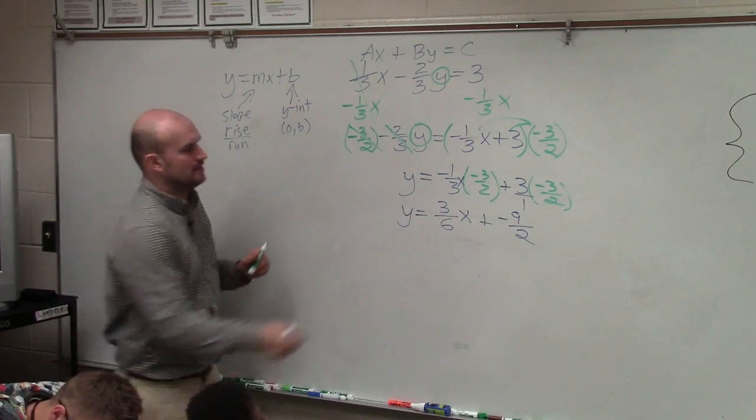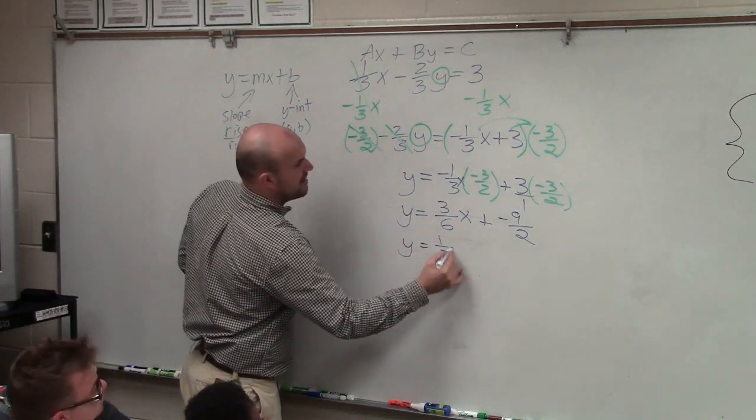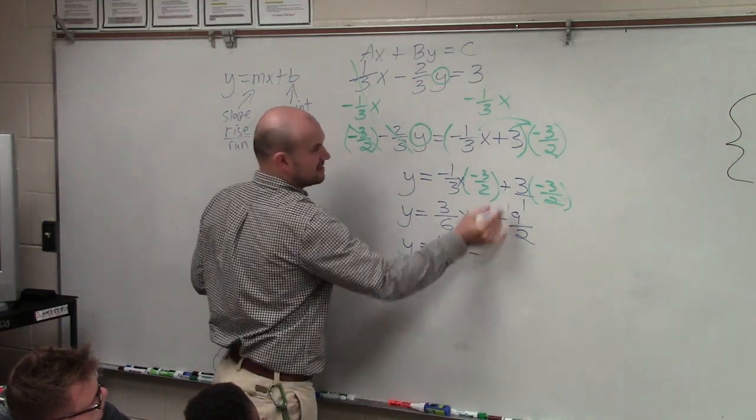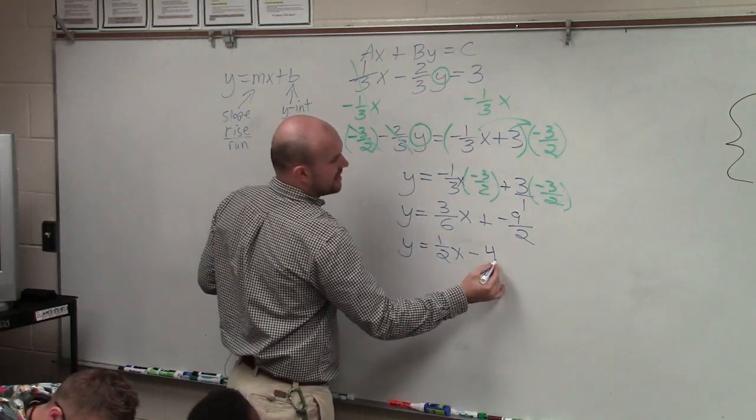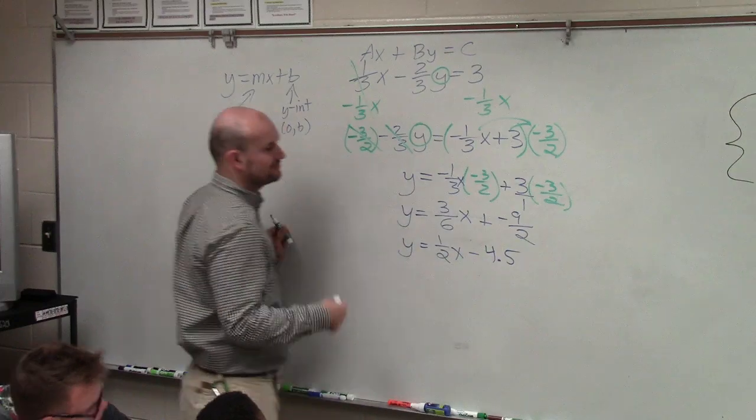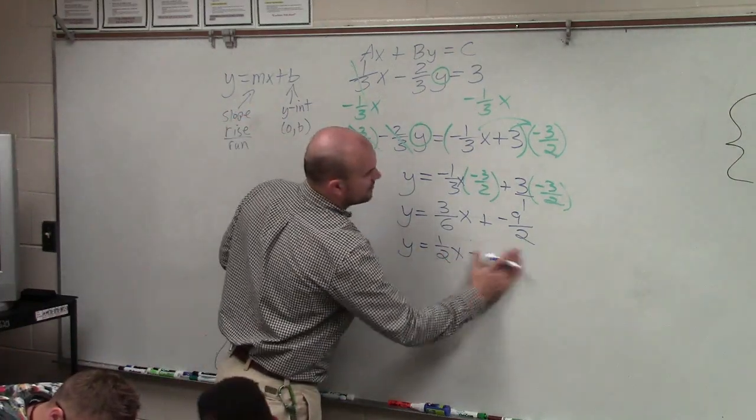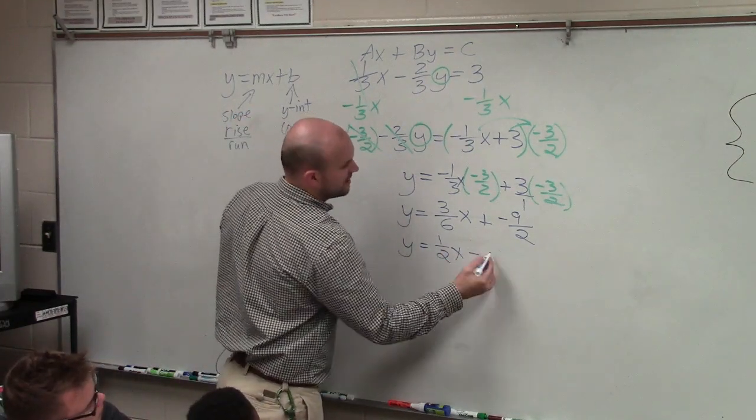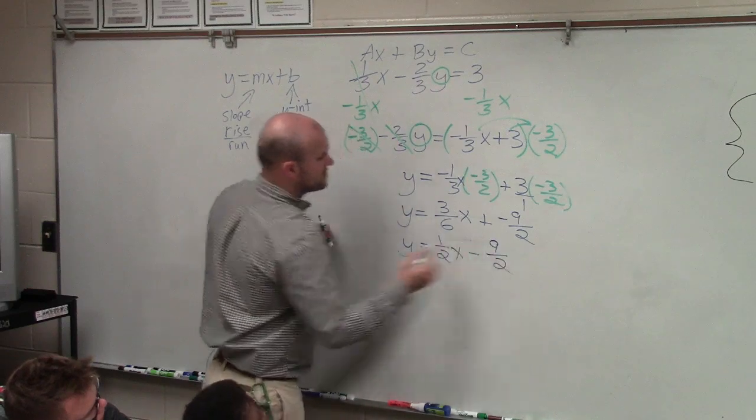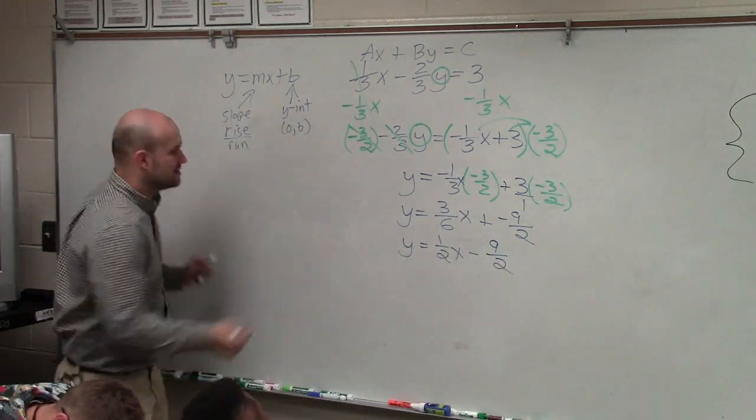Cool? Rewrite this as y equals one-half x minus this reduced to, let's do negative 4.5. Or, really, negative nine-halves. Just leave it like that as a fraction. So how do we go ahead and graph this now?